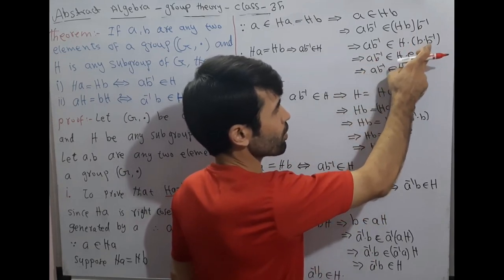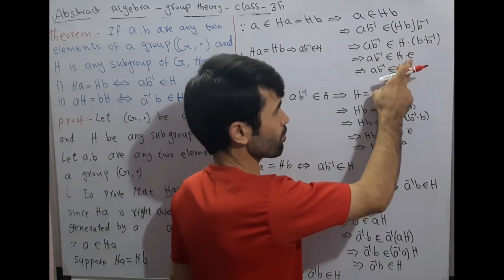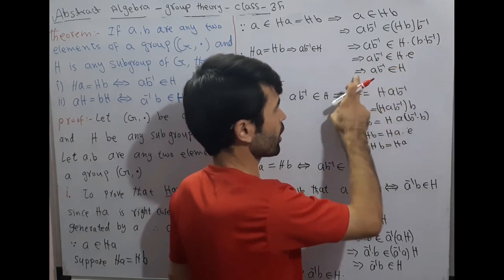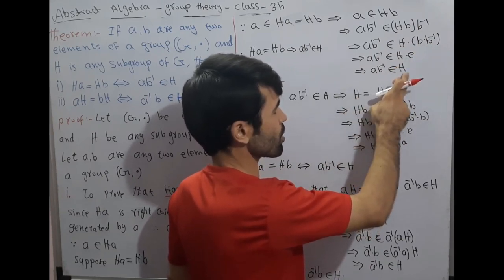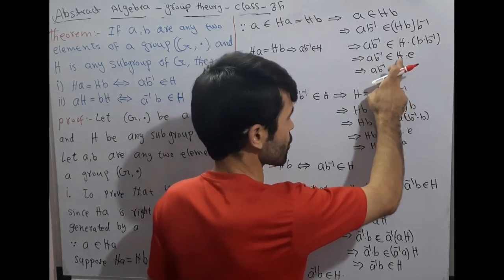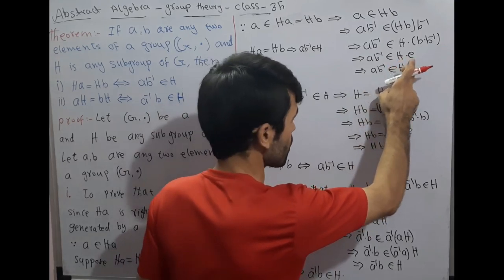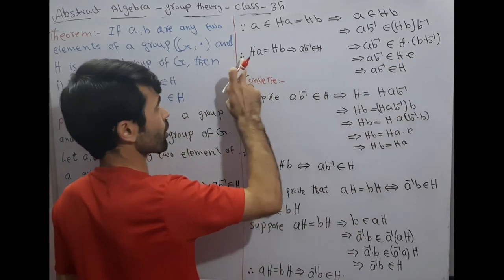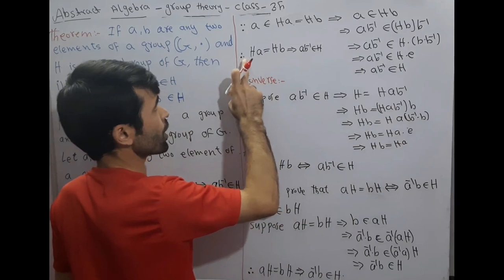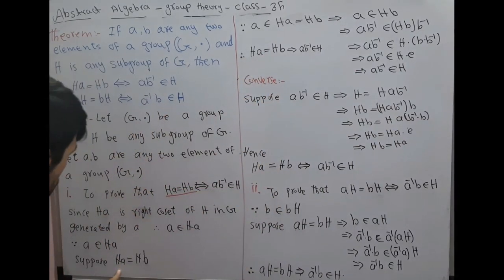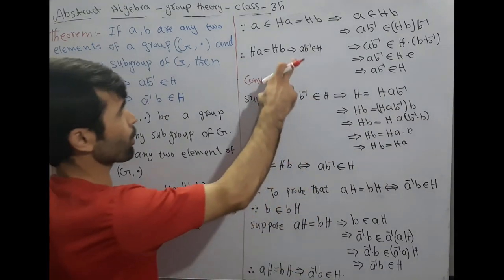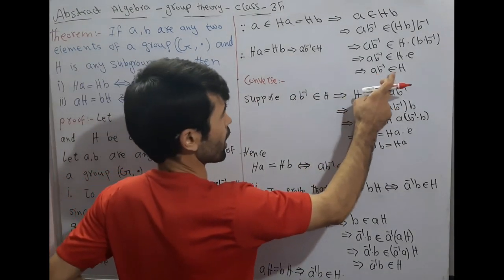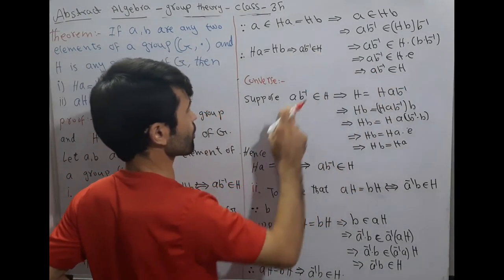Since b·b⁻¹ = e, this implies a·b⁻¹ belongs to H·e = H. Therefore Ha = Hb implies a·b⁻¹ belongs to H.